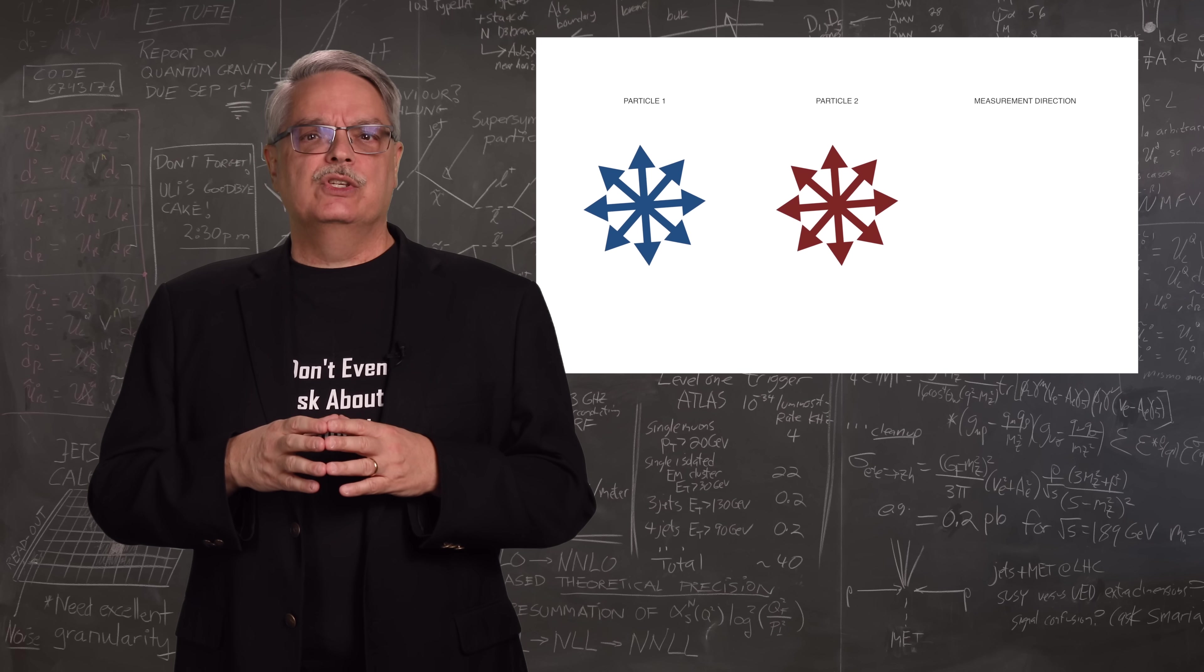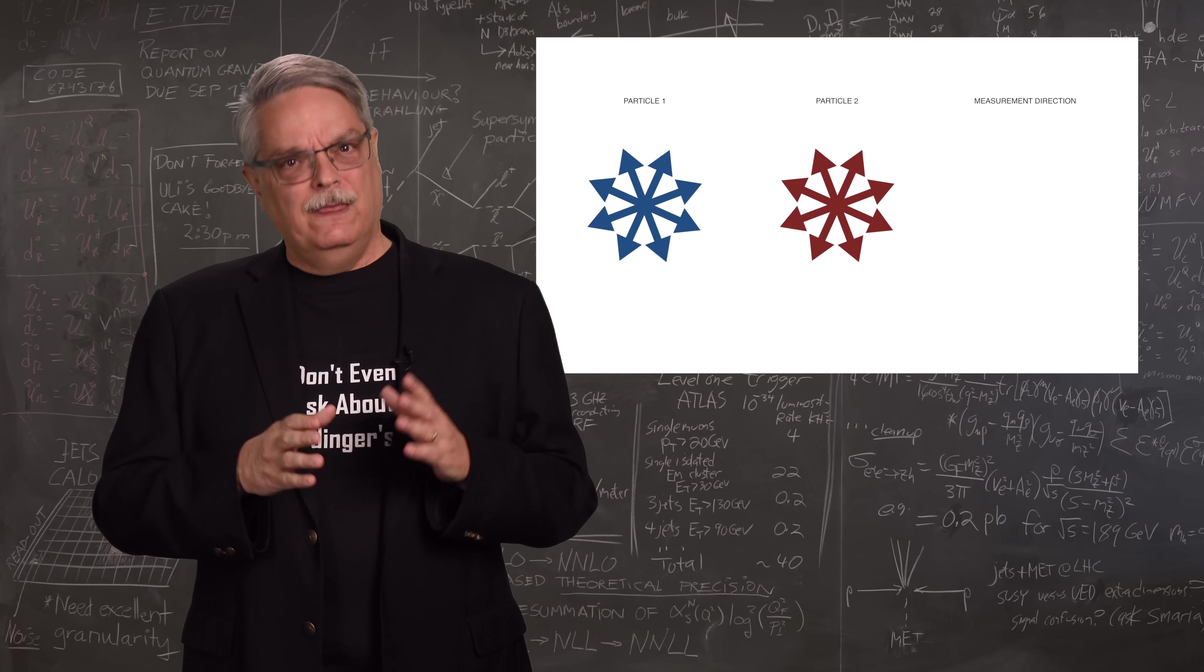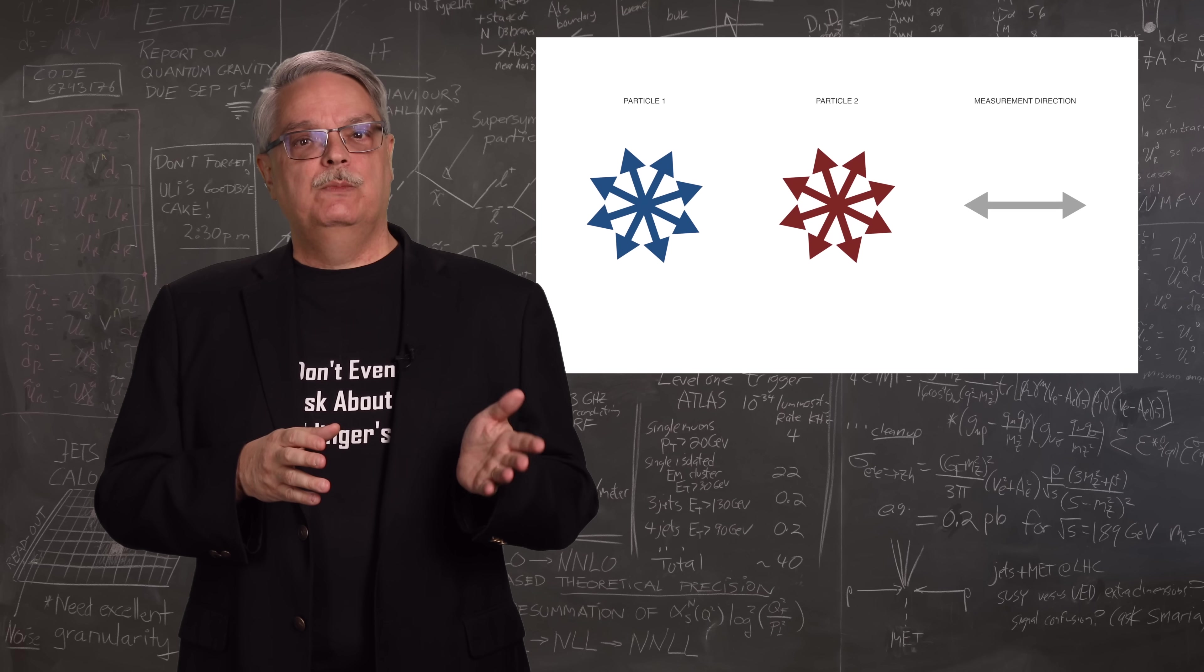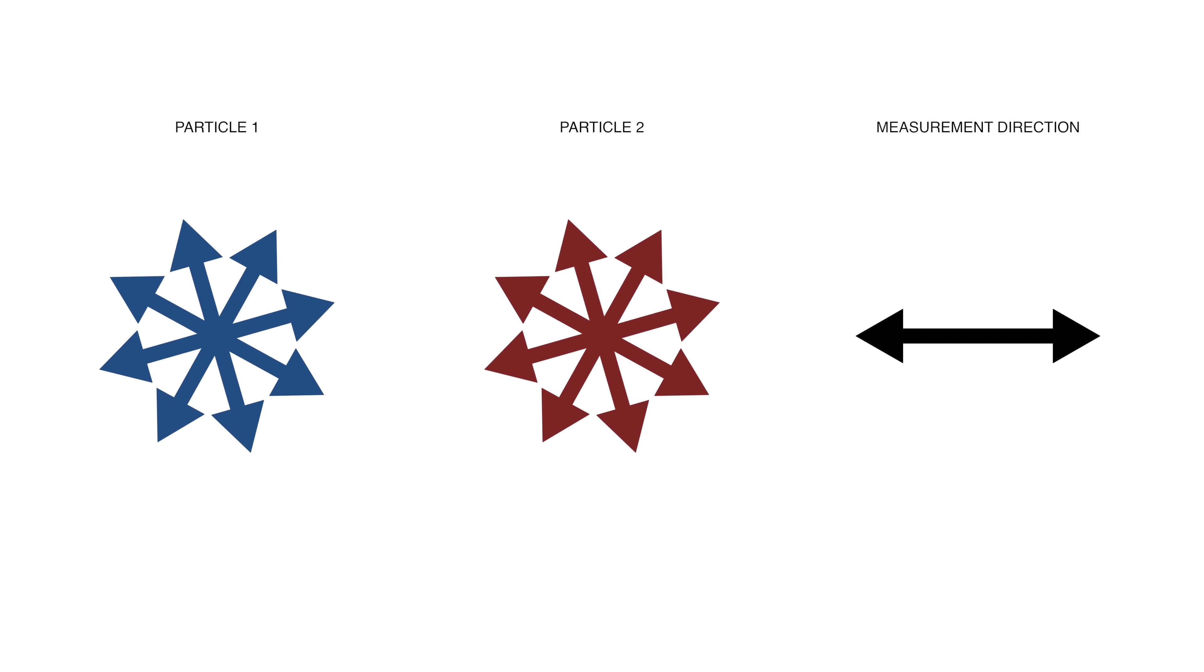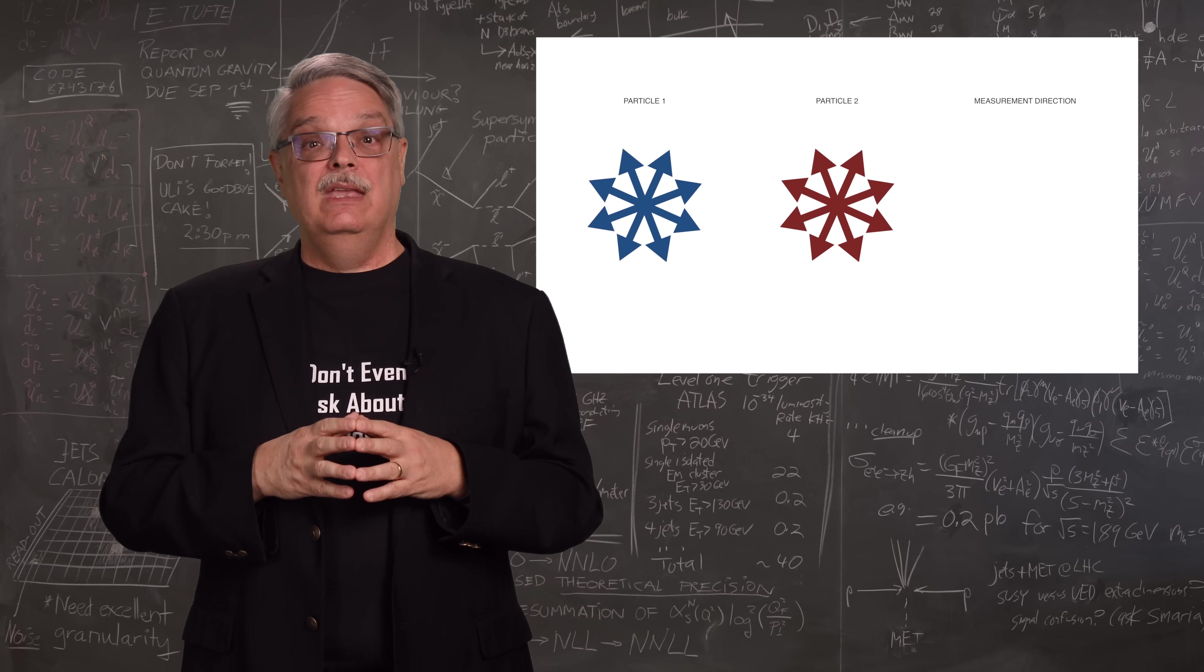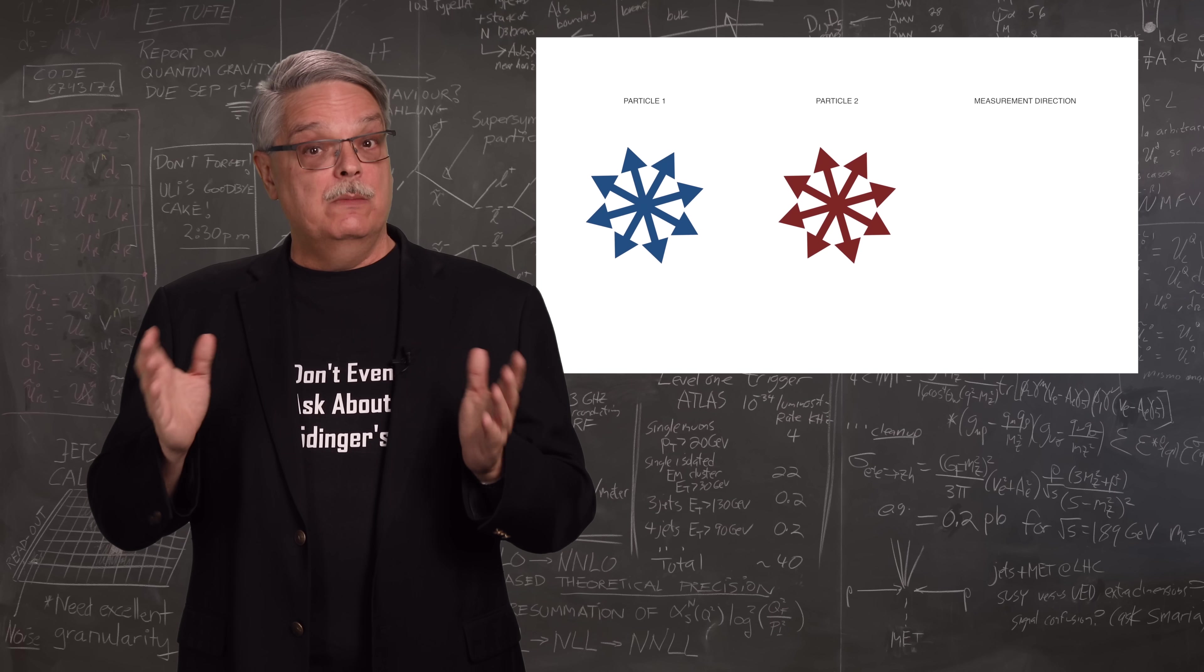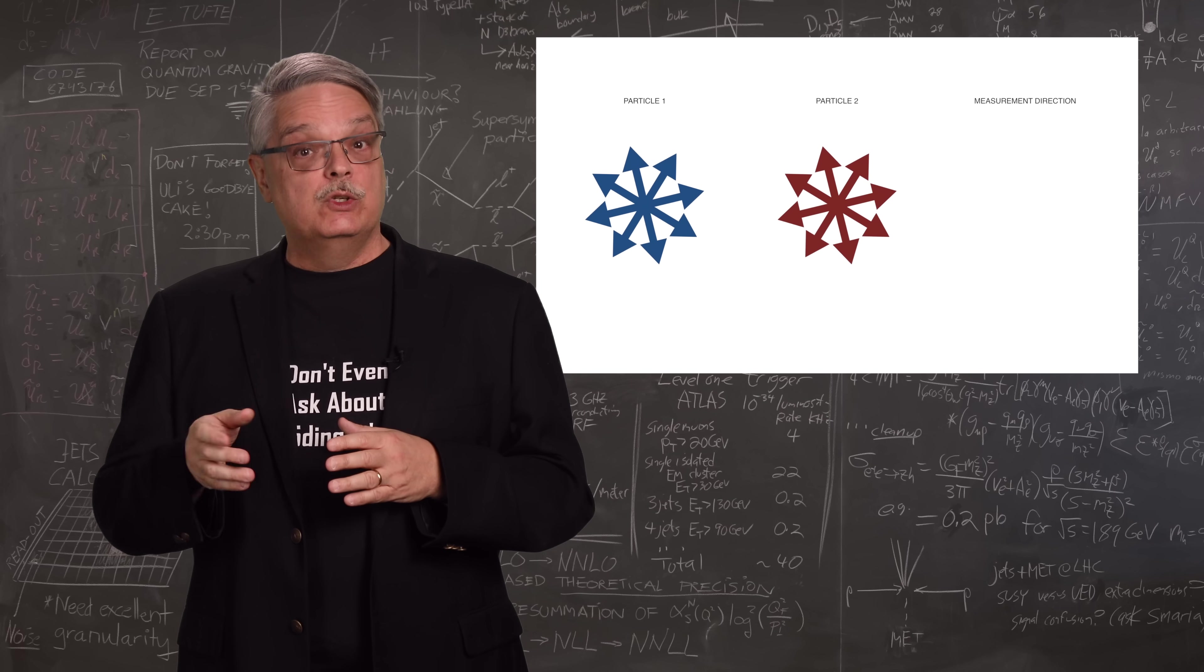The real weirdness arises when we measure the spin direction of both of the entangled particles. Say we measure the horizontal spin direction of this particle over here on the left, and the measurement says it's to the right. Then we know that the outcome of the other measurement will be 100% of the time left, 100% of the time.